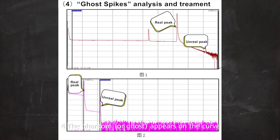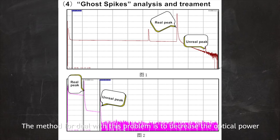4. A phantom or ghost appears on the curve because the measured optical fiber is short or there are multiple mechanical connectors on the link and they are close to each other. The method for dealing with this problem is to decrease the optical power or increase the attenuation at the end.